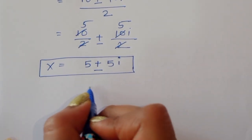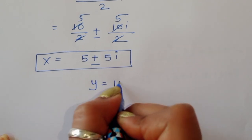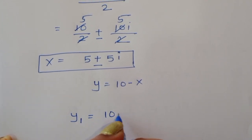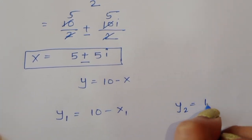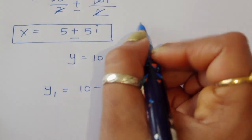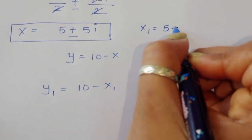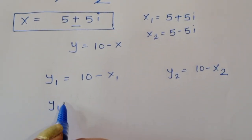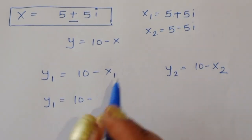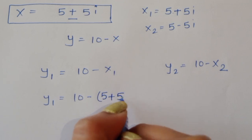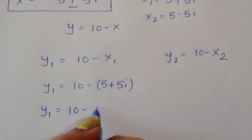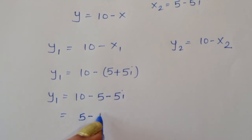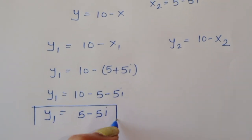Now we find y using equation 3: y equals 10 minus x. So x1 equals 5 plus 5i and x2 equals 5 minus 5i. Then y1 equals 10 minus (5 plus 5i) equals 5 minus 5i, and y2 equals 10 minus (5 minus 5i) equals 5 plus 5i.